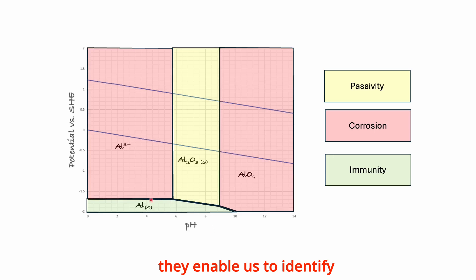They enable us to identify specific regions of pH and potential where a metal is either immune to corrosion or susceptible to it. Moreover, they show regions where a stable oxide may form on the metal surface, making the metal passive.